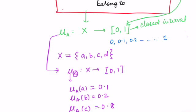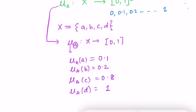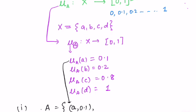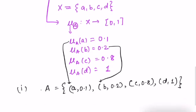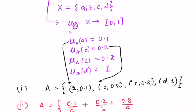We now write the fuzzy set. The first way of writing it is: a/0.1, b/0.2, c/0.8, d/1 — each element with its membership grade. The second method of writing it uses the notation: 0.1 at a, 0.2 at b, 0.8 at c, and 1 at d. These are the two ways of denoting a fuzzy set.